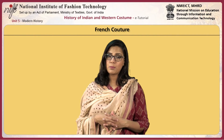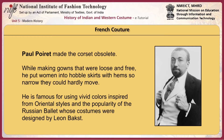Paul Poirot made the corset obsolete. While making gowns that were loose and free, he put women into hobble skirts with hems so narrow they could hardly move. He is famous for using vivid colors inspired from oriental styles and the popularity of the Russian ballet, whose costumes were designed by Leon Baxt. Spanish-born Mariano Fortuny's designs were considered timeless, drawing inspirations from non-European cultures. Most notable are his Delphus gown from ancient Greece, along with Renaissance and oriental motifs that appear frequently in his textile designs.